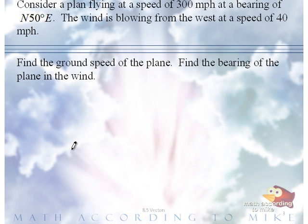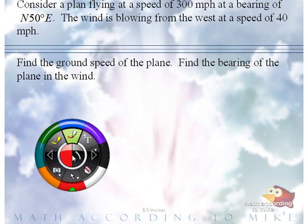Find the ground speed of the plane! That means if this plane was flying on the ground, which would be terrible, how fast is this plane going? In other words, ground speed means what is the speed of the plane in the wind? What do we need here? A picture. We definitely need a picture here.